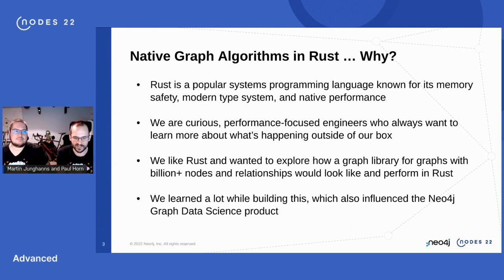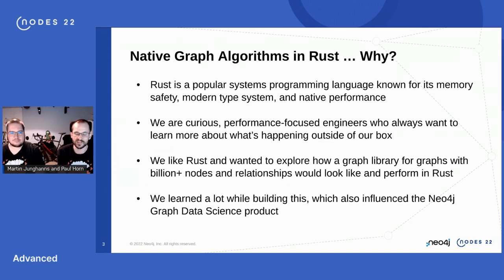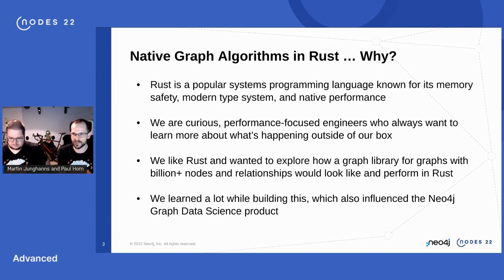The two of us work in the engine group of the Graph Data Science team, which means we focus on the in-memory graph representation and the data structures that make algorithms fast. We have an eye for performance, so it's natural to be interested in systems programming languages. We asked ourselves: how would a library look in Rust that supports graph algorithms running on billions of nodes and relationships? Things we found in Rust, like the single-source shortest path implementation, also influenced the Neo4j GDS product after we ported it to Java.